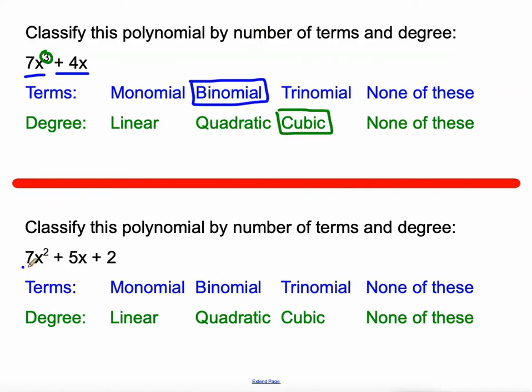Next one. It is one, two, three terms. We call that a trinomial, just like a tricycle has three wheels. And it is second degree, and we call that quadratic. So linear is first degree, quadratic is second degree, cubic is third degree.